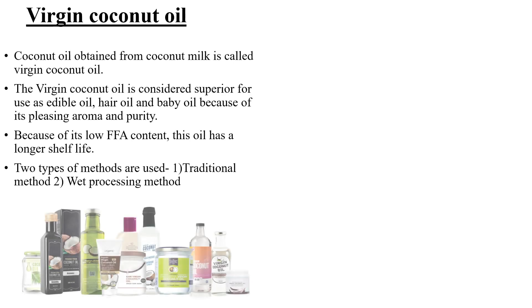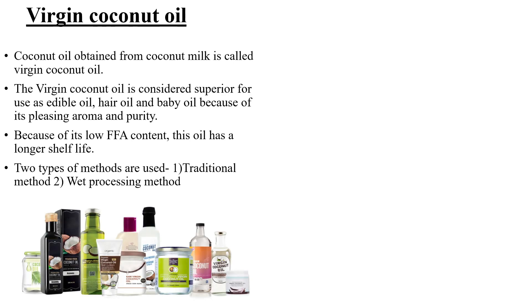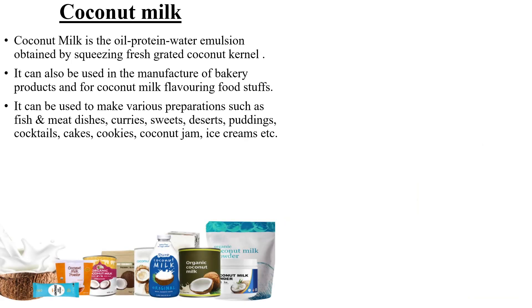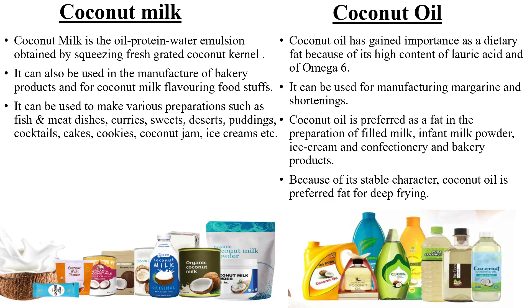The first by-product is coconut virgin oil, obtained from coconut milk. It has a low content of free fatty acids and thus a longer shelf life. The next by-product is desiccated coconut, which is dehydrated coconut meat that is grated and shredded, available in different grades based on fineness. Coconut milk is used in the preparation of curries, sweets, and ice creams. Coconut oil, derived from the high fat content of coconut, is used in cooking and is preferred for deep frying due to its stable character.